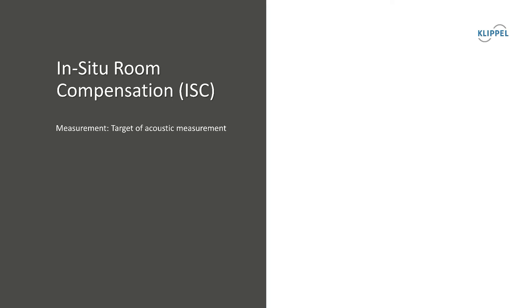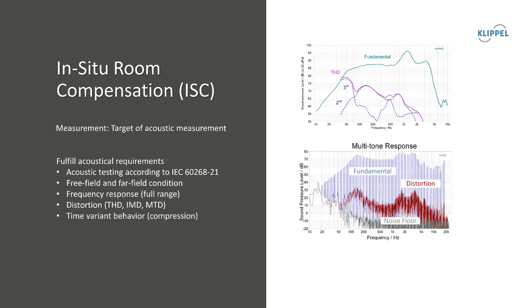According to the IEC 60268-21 standard, acoustic measurements should be performed under free-field and far-field conditions. We have to measure the linear frequency response of the device under test in the full working range. Furthermore, we have to determine the non-linear behavior, like harmonic distortion, intermodulation and multitone distortion, and other time variant behavior like compression, which occur at higher amplitudes.